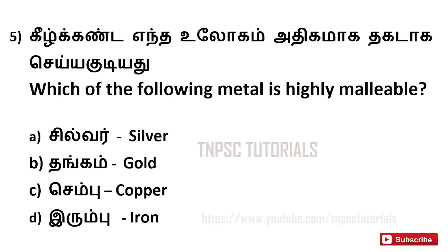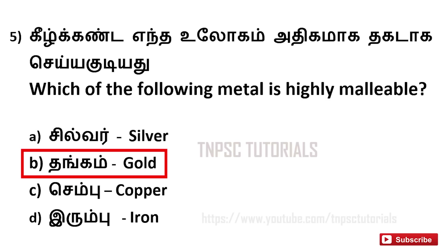Fifth one: which of the following metals is highly malleable? A. Silver, B. Gold, C. Copper, D. Iron. And the answer is B. Gold.